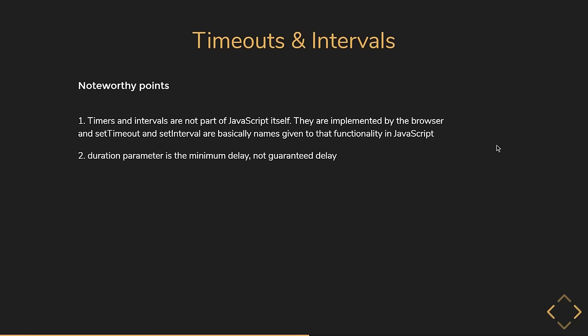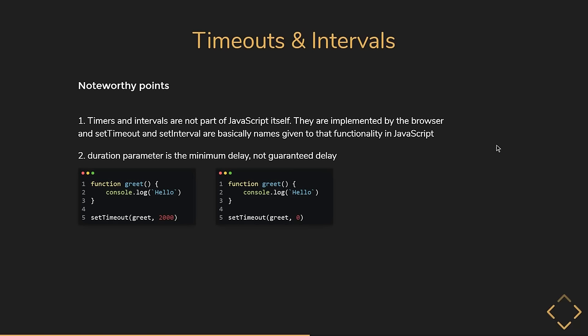If you type in setTimeout with zero milliseconds as the duration, it doesn't mean the function will run immediately — it is the minimum duration. We'll understand this in detail when we talk about the event loop. The third point is about recursive setTimeout versus setInterval. It is possible to achieve the same effect as setInterval with a recursive setTimeout — the run function keeps calling itself every 100 milliseconds. However, there are two differences: with recursive setTimeout, the same 100 milliseconds is guaranteed between executions regardless of how long the code takes to run.